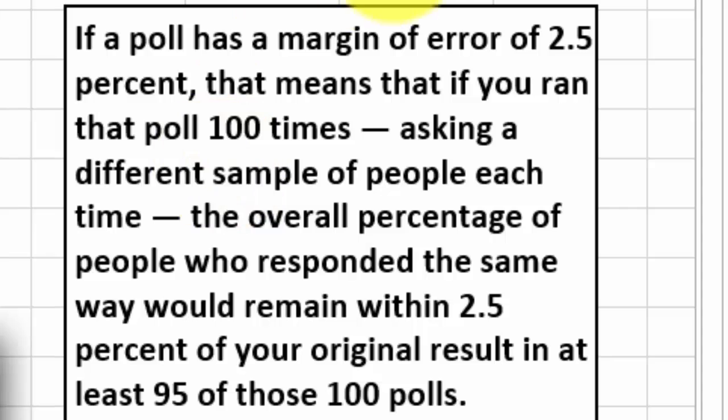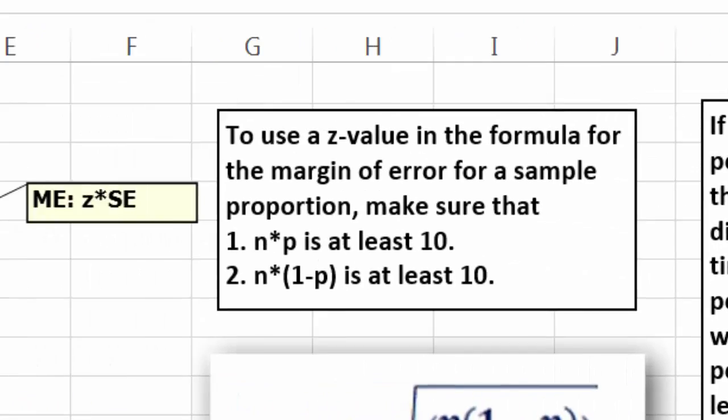First of all, what does it mean? If a poll has a margin of error of 2.5%, that means that if you ran that poll 100 times, asking a different sample of people each time, the overall percentage of people who responded the same way would remain within 2.5% of your original result in at least 95 of those 100 polls.